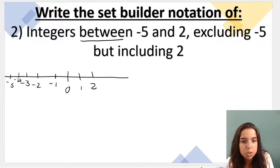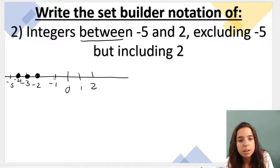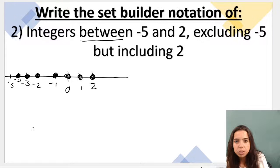We're saying that the integers are between negative 5 and 2, excluding negative 5. So if I were to do this on a number line, I would put a colored in dot here by negative 4, then negative 3, then negative 2, then negative 1, then 0, then 1, then 2, excluding negative 5. So how do I do the set builder notation of this?